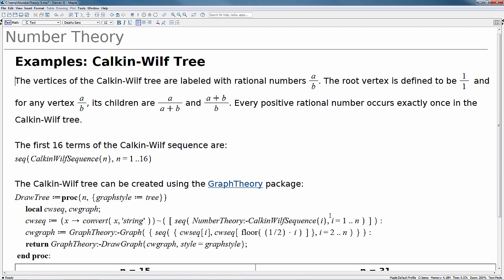Alright, so the last example I want to show you is an example of a Kalkin-Wilf tree. The vertices of the Kalkin-Wilf tree are labeled with rational numbers a over b. The root vertex is defined to be 1 over 1, and for any vertex a over b, its children are a over a plus b, and a plus b over b. Every positive rational number occurs exactly once in the Kalkin-Wilf tree.